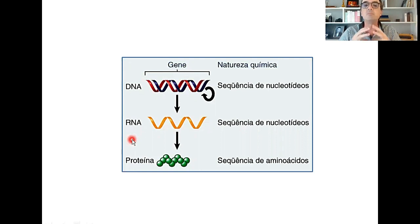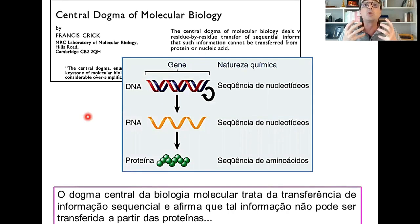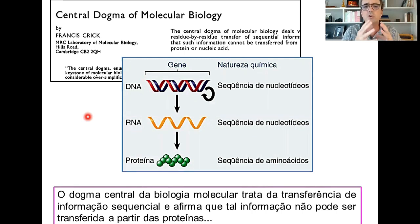Isso pareceu ser um princípio tão importante para os seres vivos que Francis Crick, em 1958, resolveu chamar essa grande hipótese de dogma central da biologia molecular. Isso trouxe bastante crítica no meio científico, porque os cientistas não usam normalmente esse termo dogma dentro de seus princípios — a ciência não depende de fé nem de crença, ela depende de evidências. Mas a palavra dogma acabou pegando e é usada até hoje.